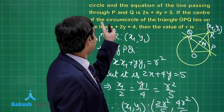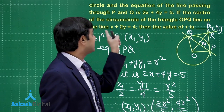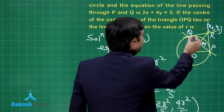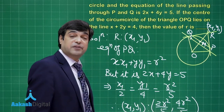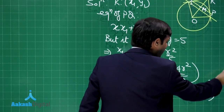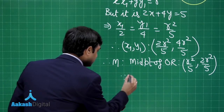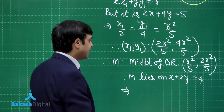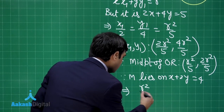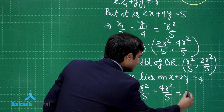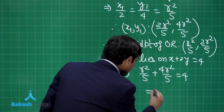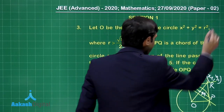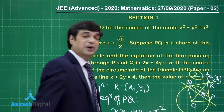Since M lies on x + 2y = 4, we substitute: r²/5 + 2·(2r²/5) = 4, giving r²/5 + 4r²/5 = 4, so r² = 4, and therefore r = 2. The radius of the given circle is 2 units. The correct answer for this question is 2.